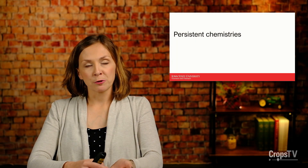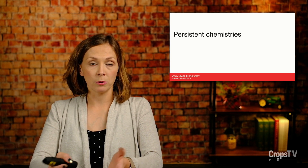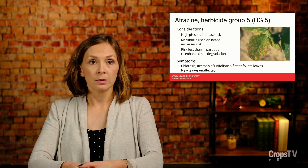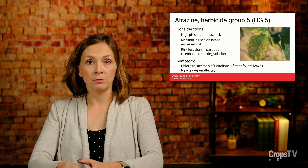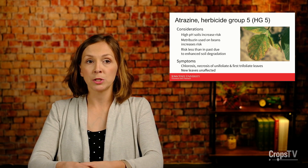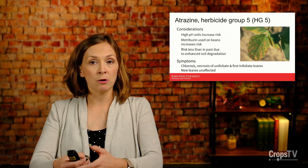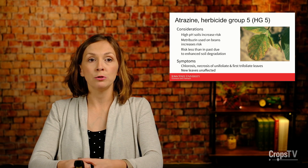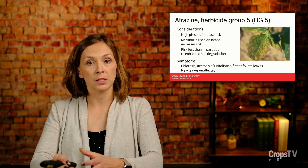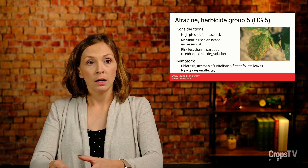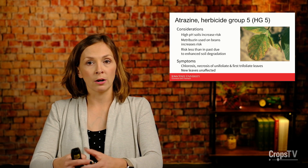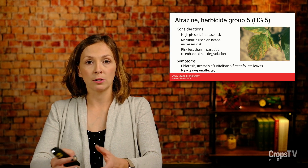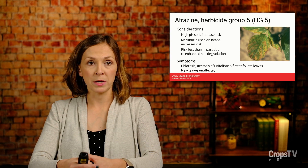Now let's talk about some of the chemistries that are more persistent in our corn and soybean production systems. Our first one is atrazine, a member of herbicide group 5 — the photosystem II inhibitors. It has been known for a very long time that atrazine is prone to carrying over and causing issues especially in high pH soils. We need to be aware of where our high pH soils are and adjust our atrazine rate or consider other products if we know atrazine will be an issue.